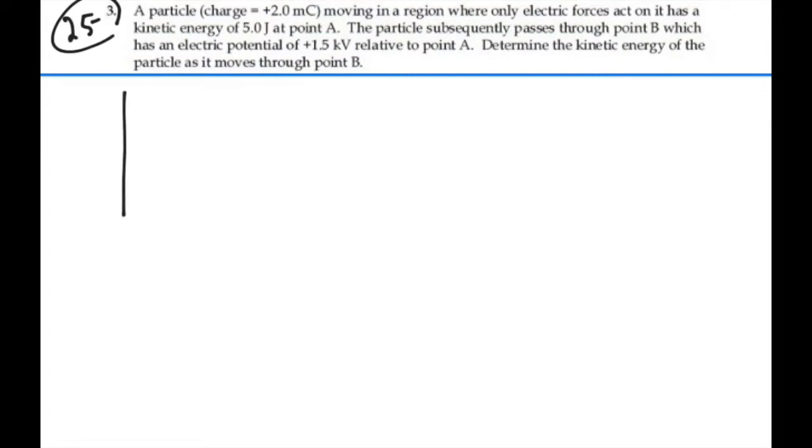Let's visualize what's going on here. Here's point A, and we've got a charge, a positive charge, of 2 millicoulombs at point A. And then we're going to have a point B, and we know that we have a kinetic energy at A, 5 joules.